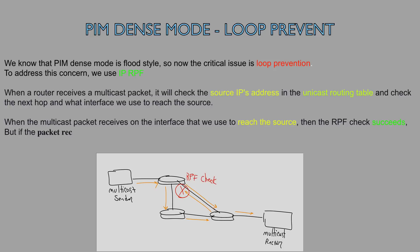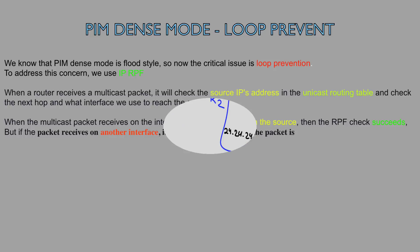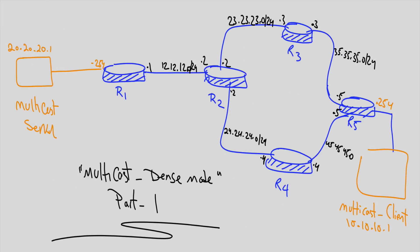But if the packet arrives on another interface, it fails the RPF check and the packet is dropped. Now let's go to the lab to configure PIM Dense Mode.